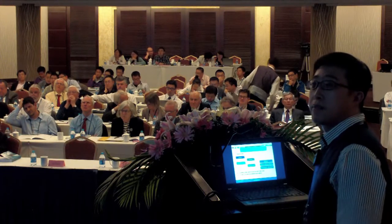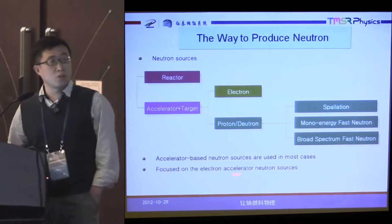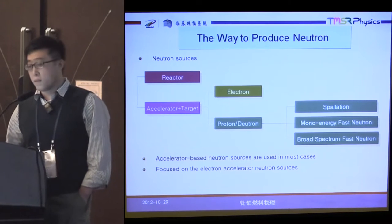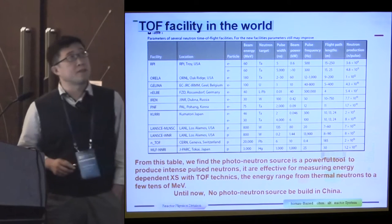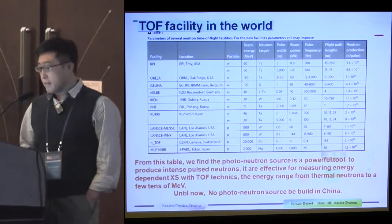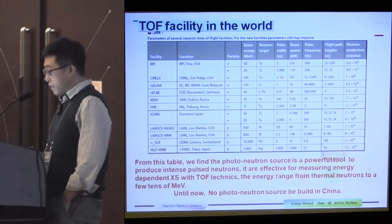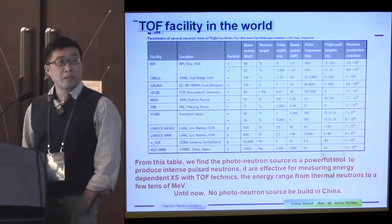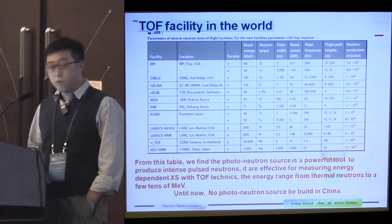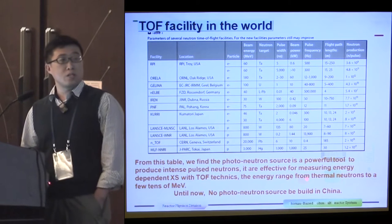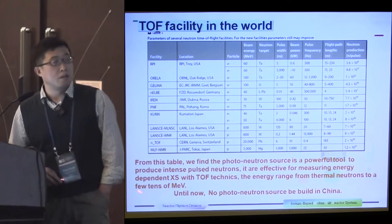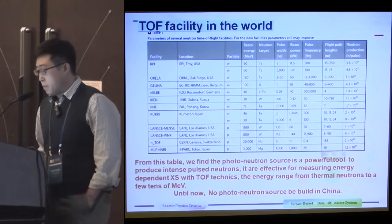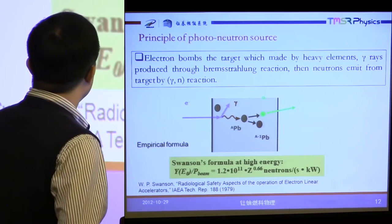The way to produce neutrons: accelerator-based neutron sources are used in most cases. So we focus on the electron linac accelerator neutron source. This picture shows the top facilities in the world. From this table, we found the photoneutron source is a powerful tool to produce intense pulsed neutrons. These are effective for measuring energy-dependent cross-sections with TOF technique, and the energy range covers from thermal neutrons to a few tens of MeV. Until now, no photoneutron source can be used in China.